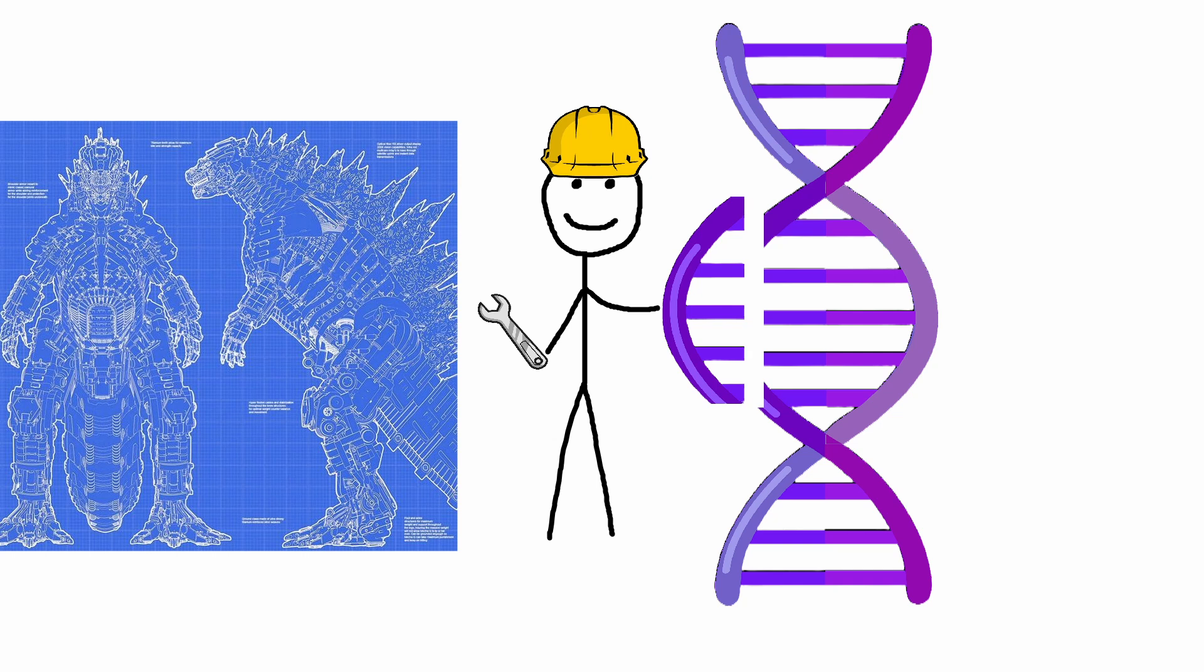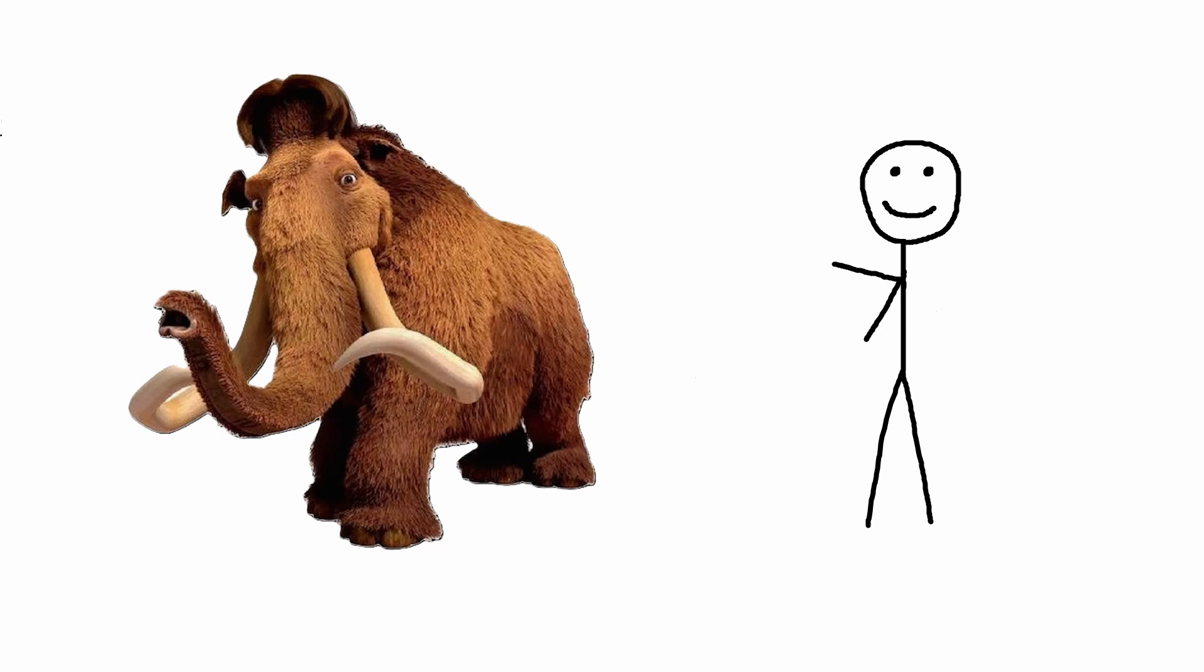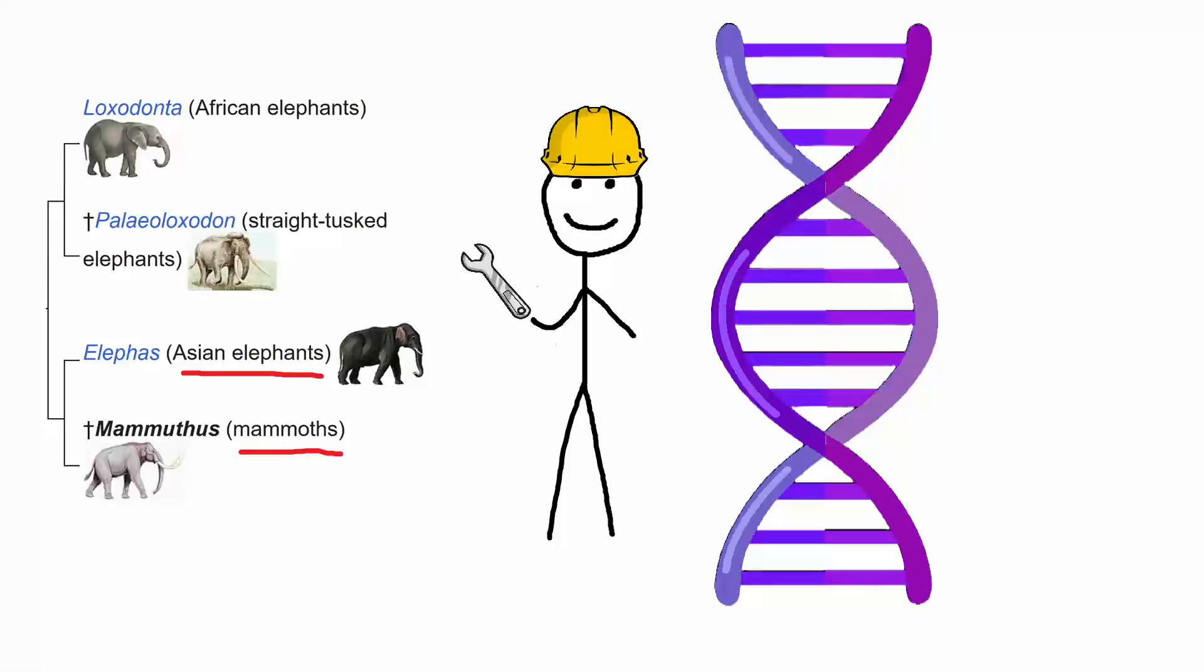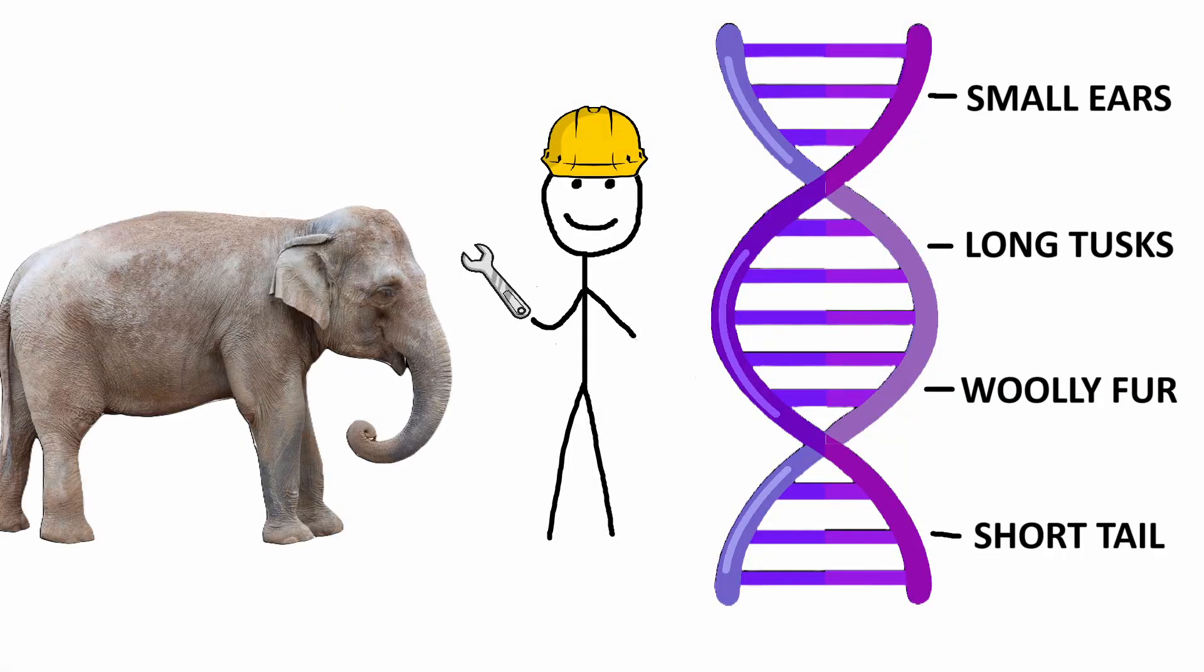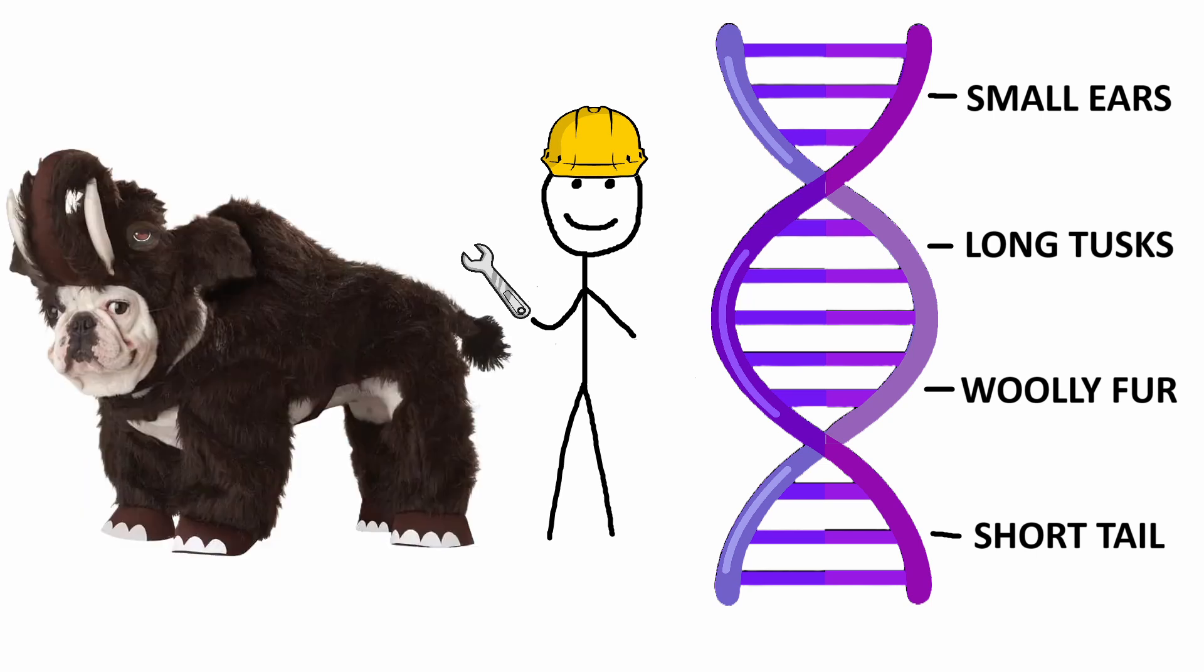So besides cloning, we have genome editing and it's exactly how it sounds like. Let's say we want to bring the woolly mammoth back. So we can take the DNA of a close living relative, like today's elephants, and edit it to include traits from the mammoth. Now the result is an animal which is not entirely a woolly mammoth, but a hybrid of a mammoth and today's elephants.